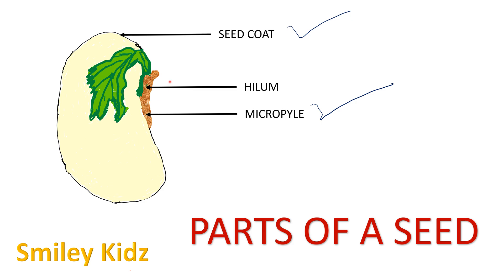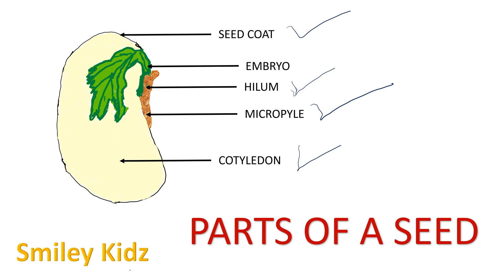Above the micropyle is a scar called the hilum. The structure inside the seed coat can be separated into two halves. Each half is called a cotyledon, or seed leaf. The developing baby plant is also called an embryo. All these are the parts of a seed: seed coat, embryo, hilum, micropyle, and cotyledon.